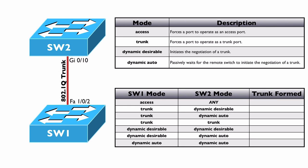If SW1 is set to access mode, it really doesn't matter what SW2 is set to — a trunk is not going to be formed. What if SW1 is set to trunk mode and SW2 is set to dynamic desirable? Trunk is going to be sending out DTP frames, dynamic desirable is also going to be sending out DTP frames, and dynamic desirable is willing to become a trunk — yes, a trunk will be formed. If SW1 is set to trunk and SW2 is set to dynamic auto, trunk sends DTP frames, and dynamic auto will respond and form a trunk. If both sides are set to trunk mode, they're both sending DTP frames and both statically operating as a trunk — yes, a trunk will be formed.